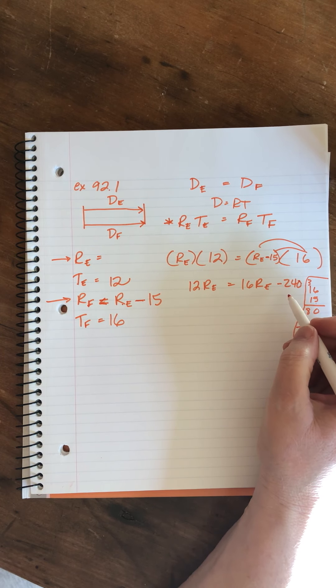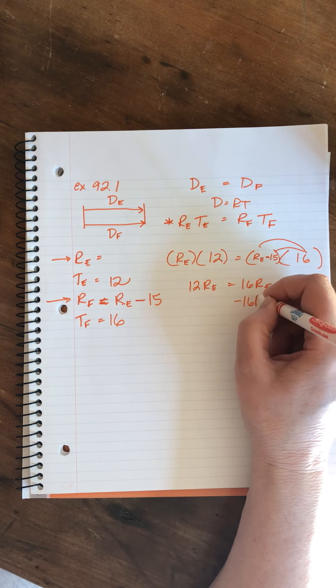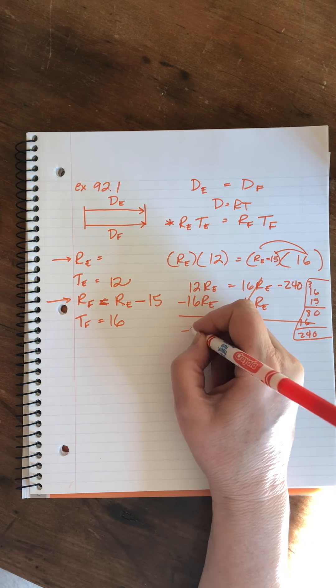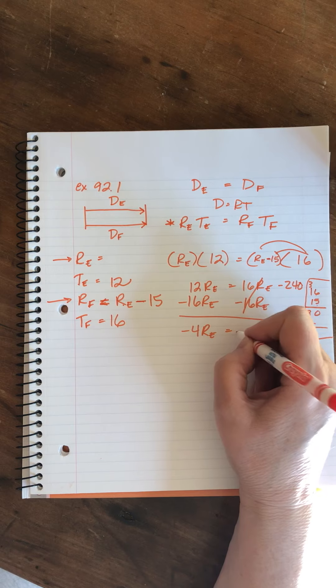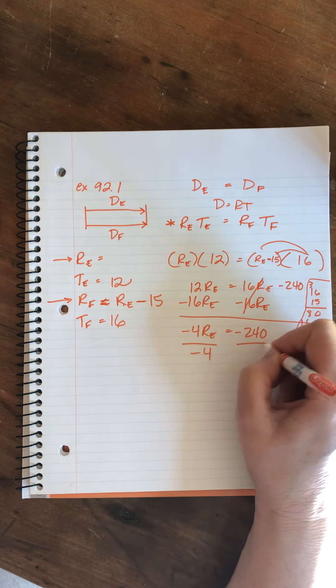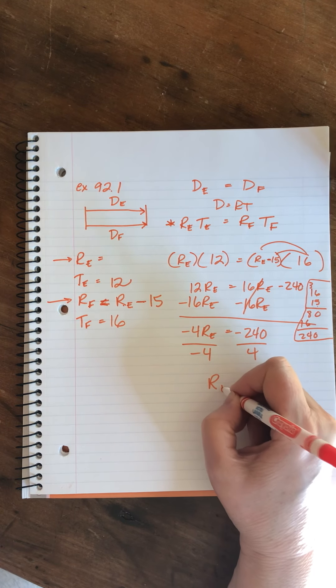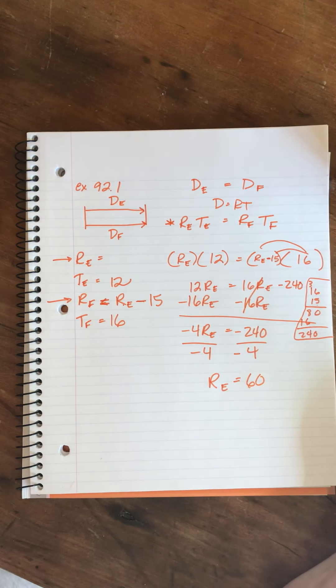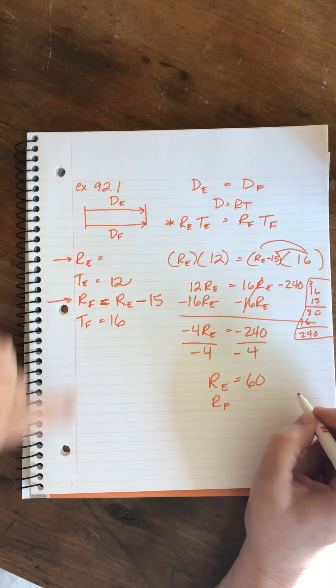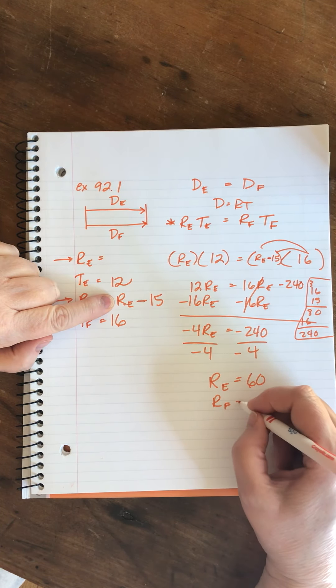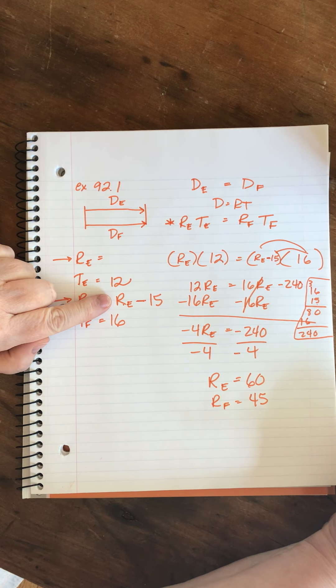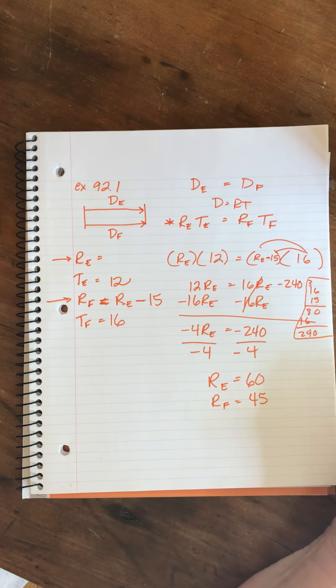Now, I'm going to... Oh boy! This is going to end up in negative land. But it's okay. Minus 16 RE to swim those fishes that way. And I get minus 4 RE equals minus 240. Divide both sides by minus 4. And I get that the rate of the express train equals... That would be... Oh! Minus 4. It would be 60, right? And so then the rate of the freight train is 60 minus 15 or 45. And I believe this is miles per... Kilometers per hour.